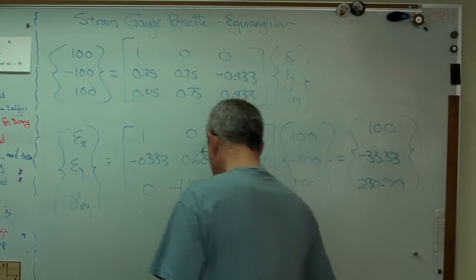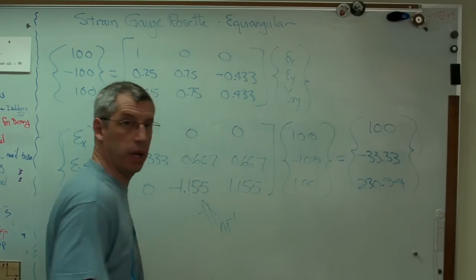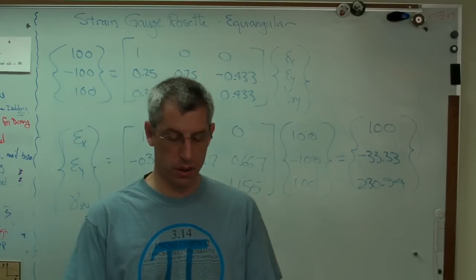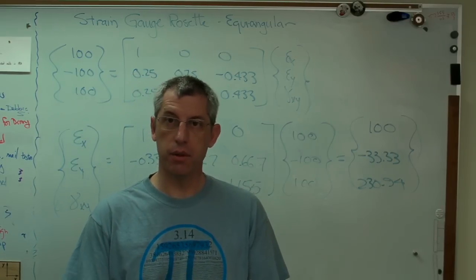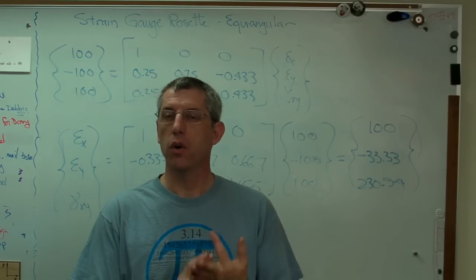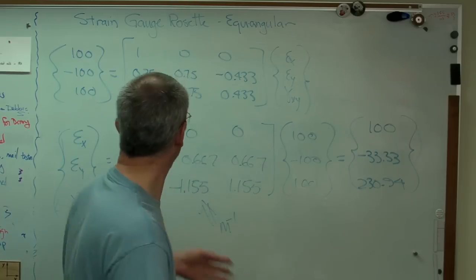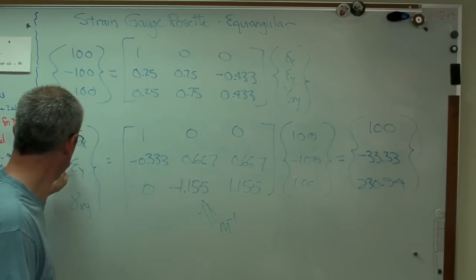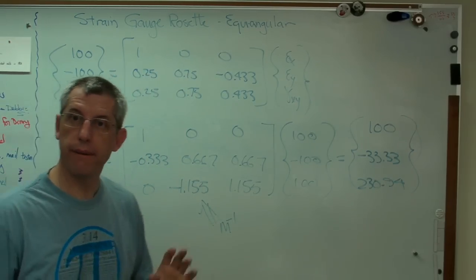There you go. So those are in microstrain. Now we've got all the numbers we need here. We started with measured numbers, epsilon A, epsilon B, epsilon C. Look at the orientation of the gauges. And we're able to calculate epsilon X, epsilon Y, gamma XY. There you go.